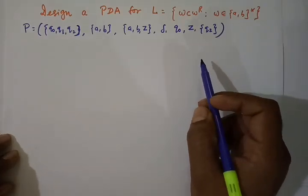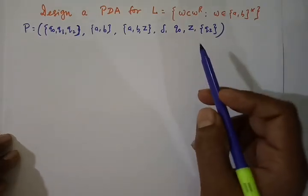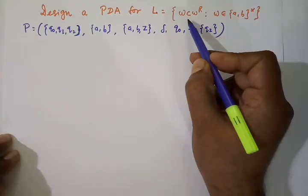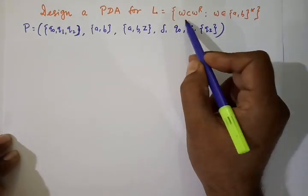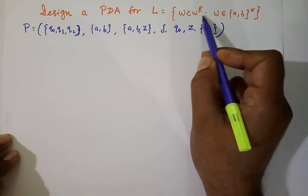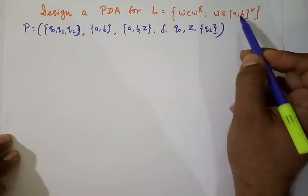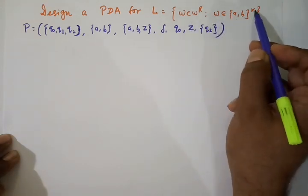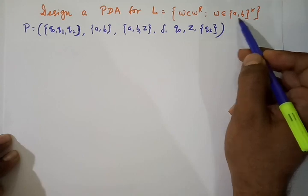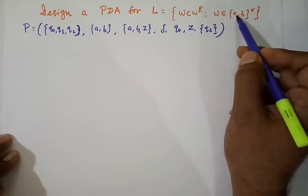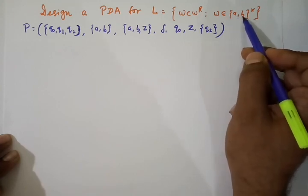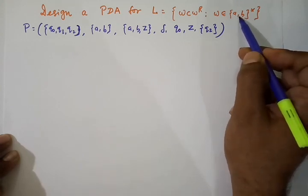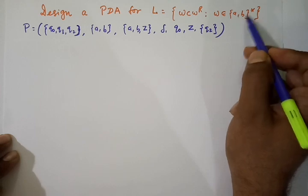In this lecture, we are going to design a pushdown automata for the language L equal to WCW^R, such that W belongs to the Kleene star of A union B, meaning W can be any string over A or B, including null.